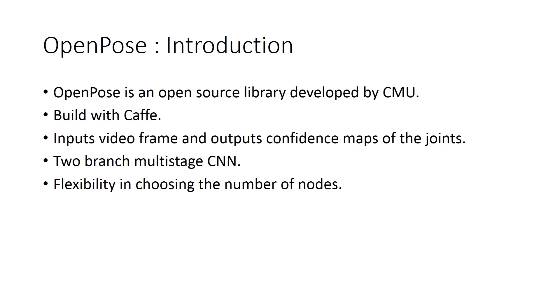OpenPose is an open source library which is developed by CMU. It inputs a video frame and outputs a confidence map of the joints. It is similar to a CNN network. It is a two-stage convolutional neural network. OpenPose gives us the flexibility of choosing the number of nodes and choosing the number of persons in each frame.